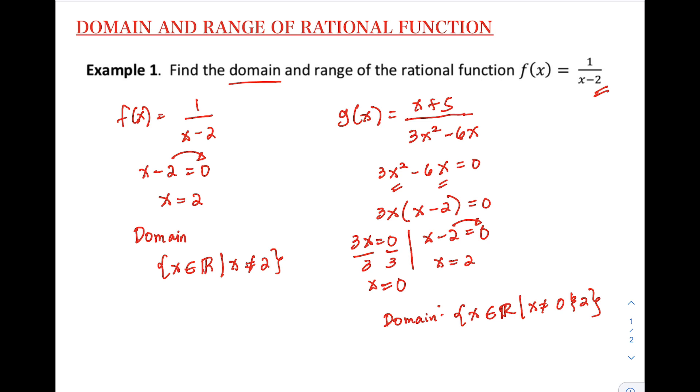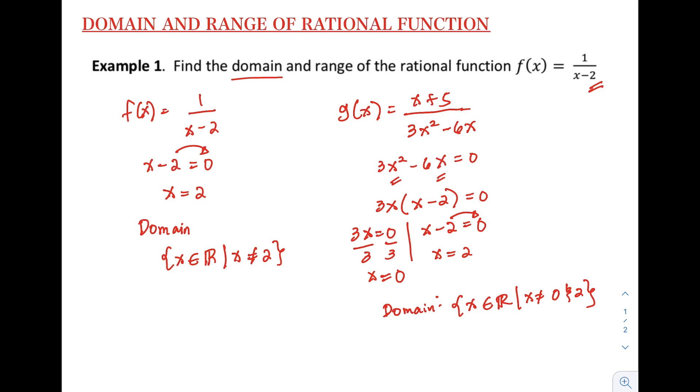So that's how simple it is to get the domain. So next, let's try to find the range of the rational function f of x equals 1 over x minus 2. So the range, on the other hand, can easily be identified through its graph, but it can also be determined by replacing f of x by y and solving for x in terms of y.